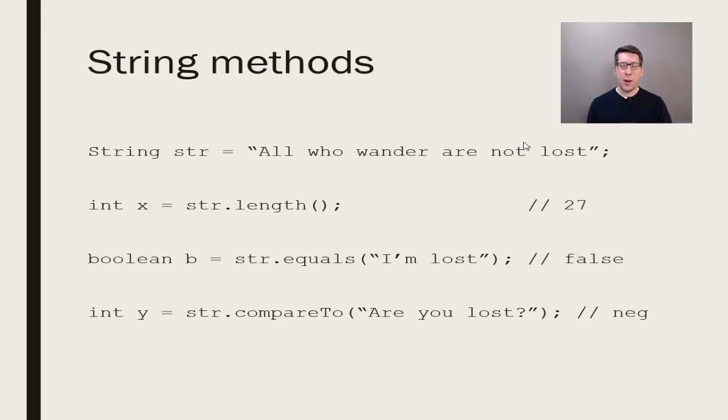Comparing the text "Are you lost" to the original string "All who wander are not lost," it would first try to compare the capital A's. Since those two letters are the same, it moves to the second character, the L in one case and the R in the other. Because the R is bigger than the L, meaning it has a higher ASCII value than the L, that method call will produce a negative outcome.